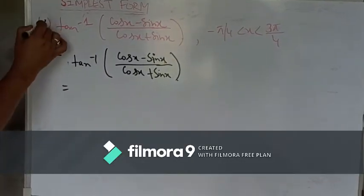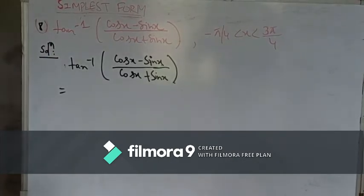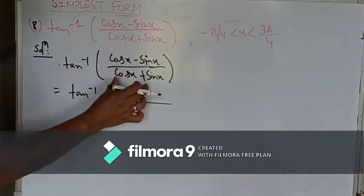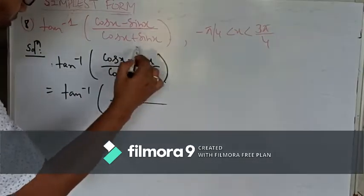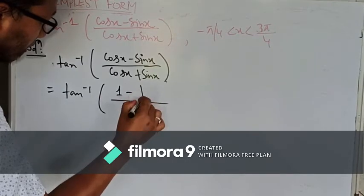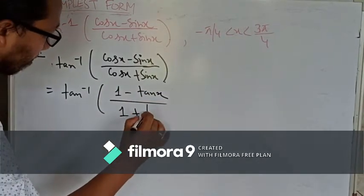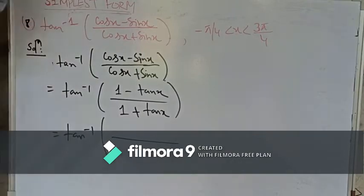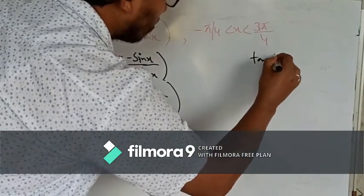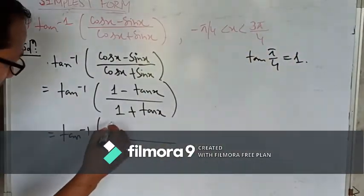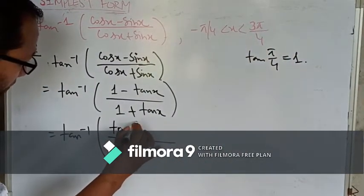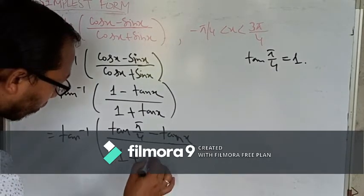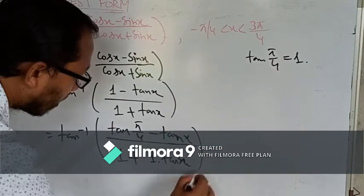Question number 8: tan inverse of this expression. So I have already written this down. We can divide both numerator and denominator by cos x. So if we divide, then we will get 1 minus tan x divided by 1 plus tan x equals tan inverse. As you know, tan pi by 4 is equal to 1, so in place of 1 you can write tan pi by 4 — pi by 4 means 45 degrees. So it becomes tan pi by 4 minus tan x, all over 1 plus tan pi by 4 times tan x.